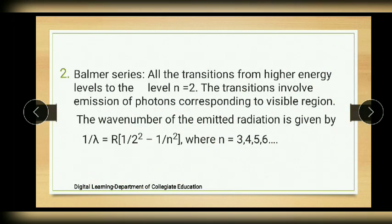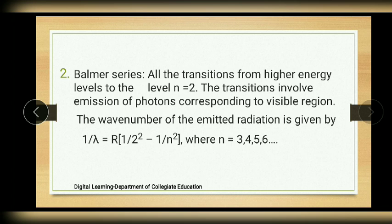The next one is the Balmer series. All transitions from higher energy levels to the level n = 2 give the Balmer series in the hydrogen spectrum. These transitions involve emission of photons corresponding to the visible region. The wave number is given by the Rydberg equation where ni = 2 and nf can take values 3, 4, and so on.